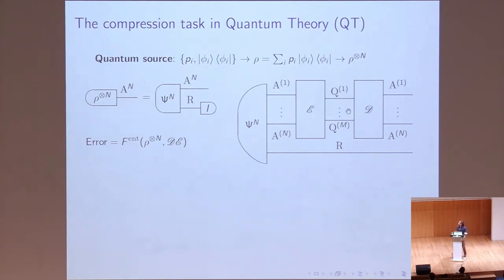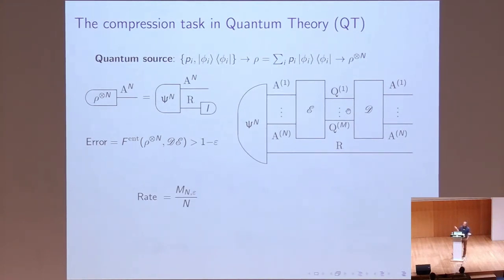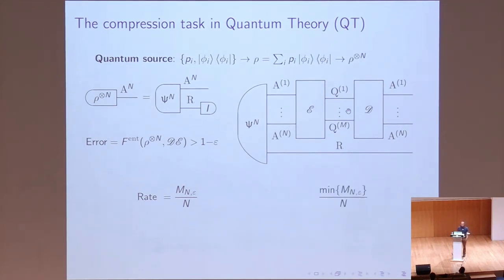Here E and D are two quantum channels that store the n copies of A, in which the local signal is supported, onto m copies of qubits. If we fix the threshold for the error computed by using the entanglement fidelity, the performance of a compression scheme is given by the rate — the number of qubits the protocol uses divided by the number of usages of the source. The task is to minimize this number of qubits, and the quantum information content is then defined as the asymptotic limit of an infinitely large number of usages and the limit of vanishing error.